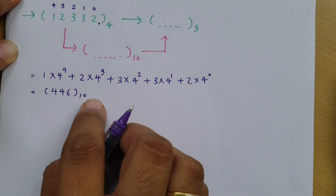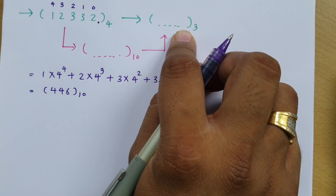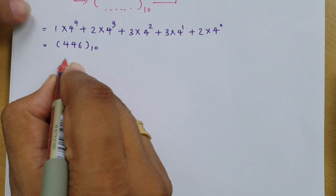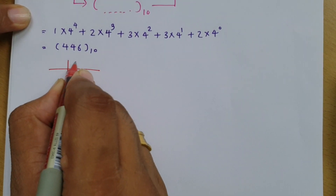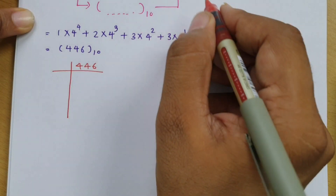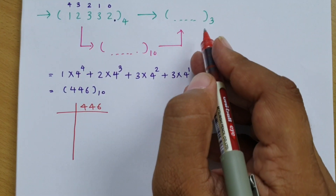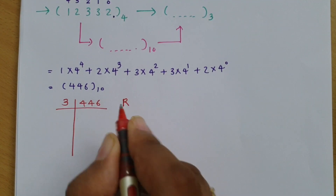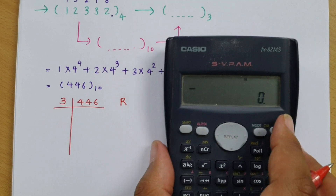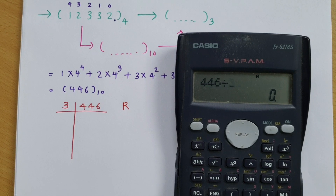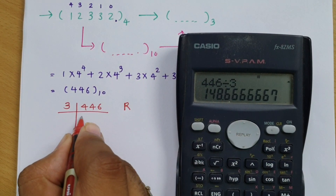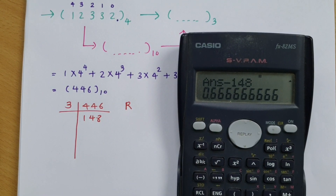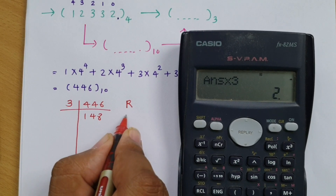Now we translate 446 decimal into ternary using the division rule. We divide 446 by 3: that is 148 with remainder 2. So the first remainder is 2.